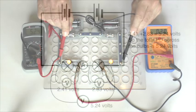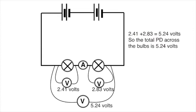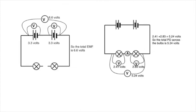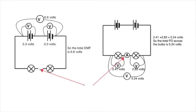So a total of 5.24 volts across the external components, that's the bulbs of this circuit, means that there are 5.24 joules being converted for every coulomb that passes. We have to explain why that's not 6.6 volts and the explanation is in the fact that the ammeter completed the circuit.